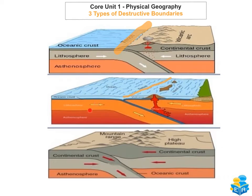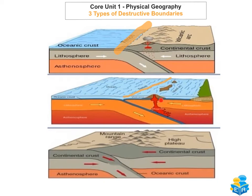As the older, heavier plate subducts, the rock melts and sinks. As the plate descends, the heat and pressure from the subduction causes the rock to melt, forming a magma reservoir. The magma finds its way up through fissures and cracks to form a volcano, and as those volcano cones rise from the ocean floor they form volcanic island arcs. An example of this would be the Japanese islands.